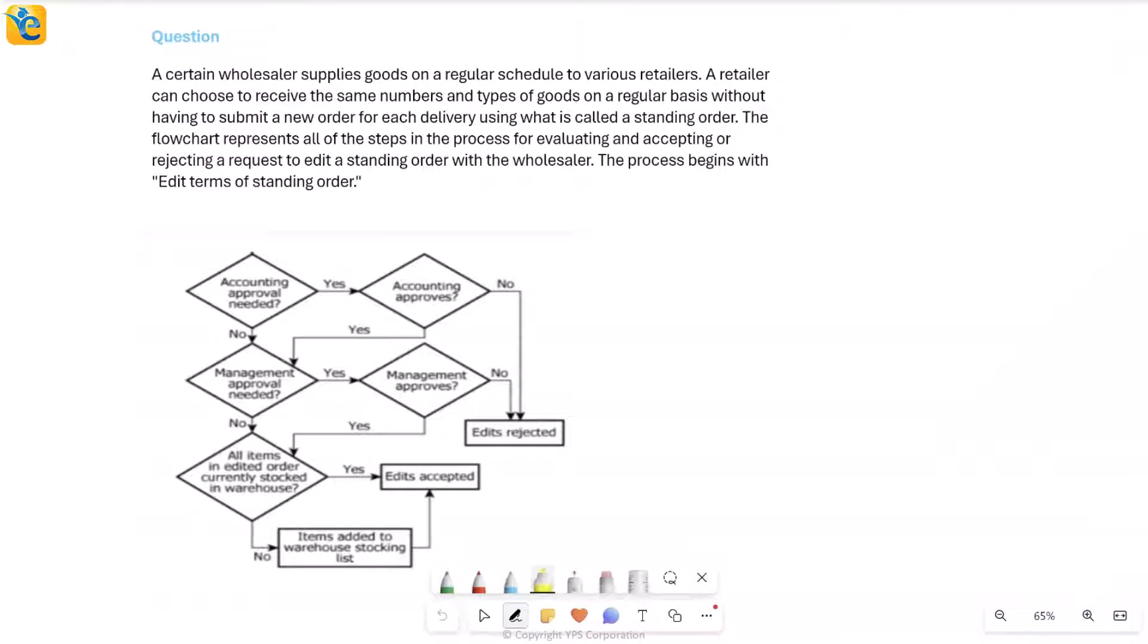In this question, we are talking about a certain wholesaler who supplies goods on a regular basis to various retailers. A retailer can choose to receive the same numbers and types of goods on a regular basis without having to submit a new order every time using something called a standing order.